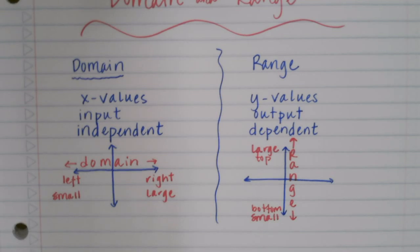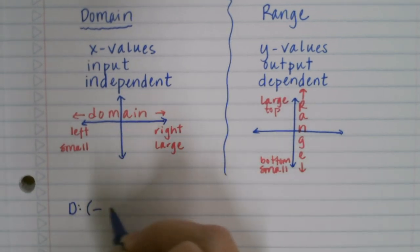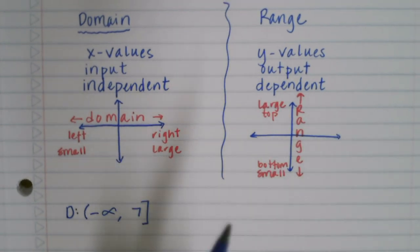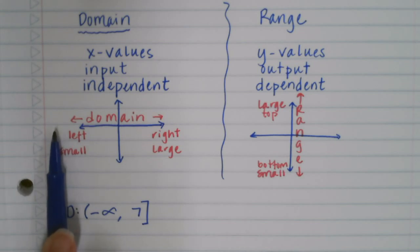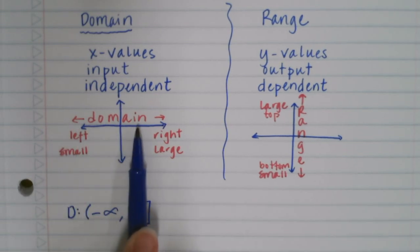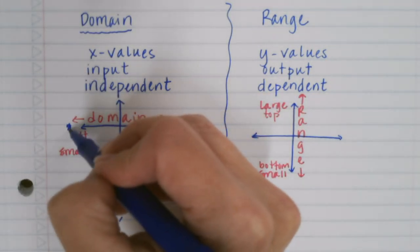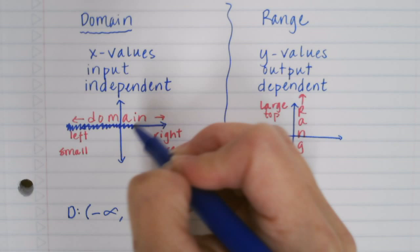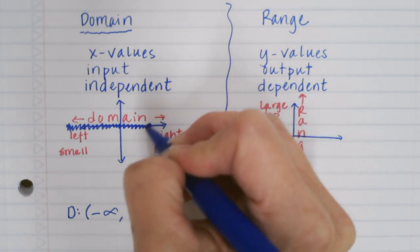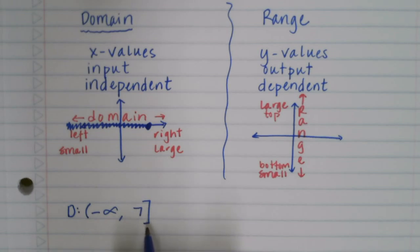So just to give you an example, if we had a domain of negative infinity to 7 with brackets, that would mean that we're going from negative infinity all the way over to 7 and then we're stopping. So that would look something like we've got this shading all the way over here, we get over to 7 and then it stops, because the solid dot is what we use when we have a bracket.